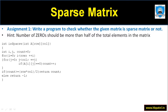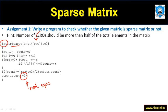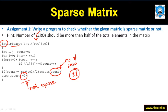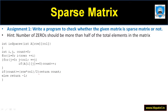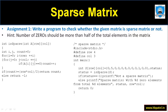Let us write the function 'isSparse', which takes the array as input. If the matrix is not sparse, it returns minus one. If it is sparse, it returns the number of zero elements. For example, in our previous case with 16 elements, 11 were zero, so it returns 11. If half of the elements are not zero it returns minus one, otherwise it returns the counter.